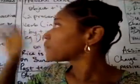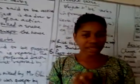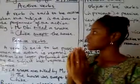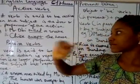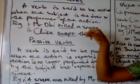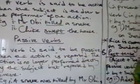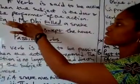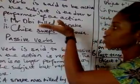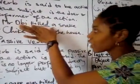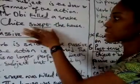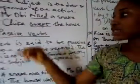A verb is said to be active when the subject is performing the action. If the subject is performing the action, then that particular verb is active. For example, 'Mr. Obi killed a snake.' When you look at this example, you see that Mr. Obi is the subject and 'killed' is the verb. And because it is Mr. Obi that is performing this action directly, then this verb is active. The same thing with 'She can sweep the house' — 'sweep' is active.